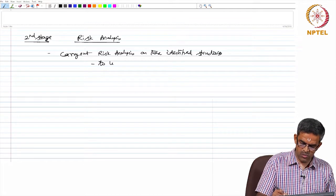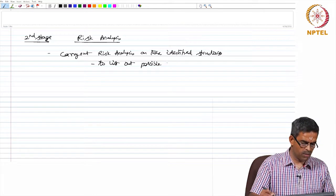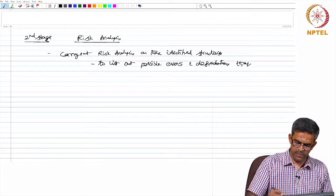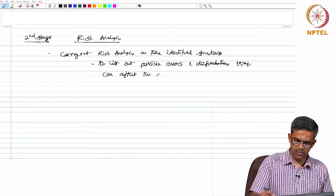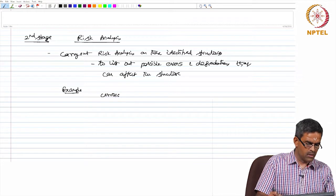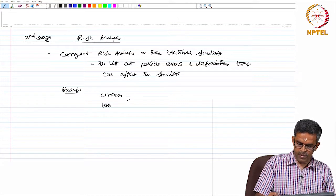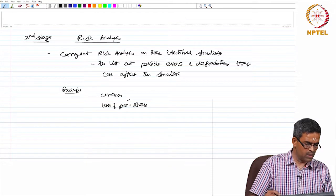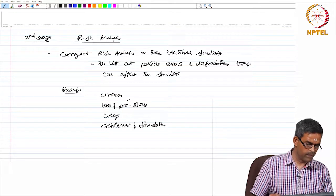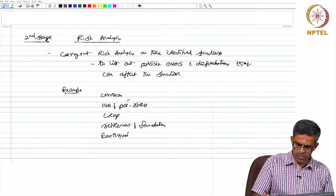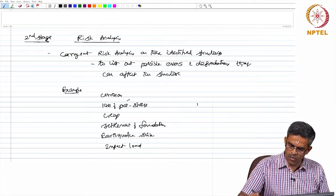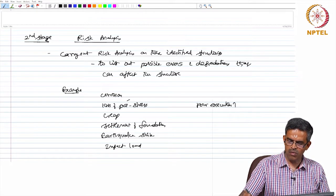Things to list out: possible events and degradations that can affect the structure. I can give some examples: corrosion, loss of prestress in highway girders, presence of creep, settlement of foundations, earthquake strike.